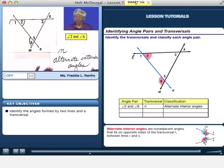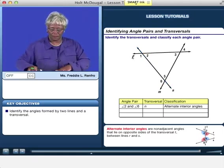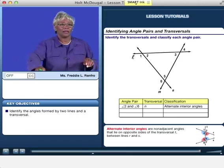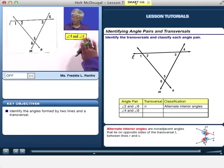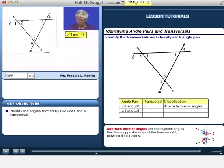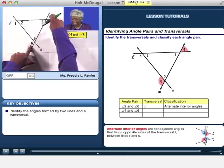Let's try another one. Let's look at angle 4 and 6. Let's see, 4 is up here and 6 is down here.